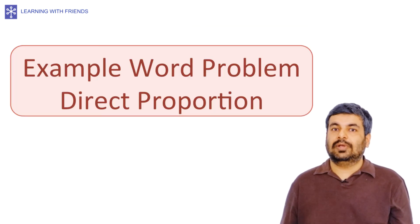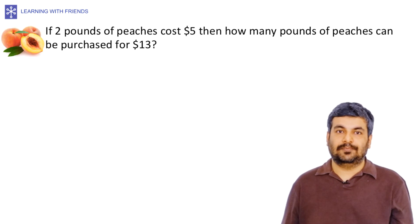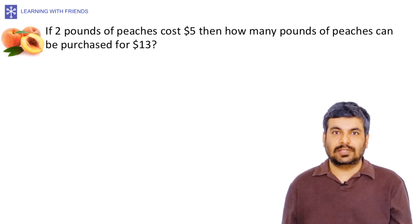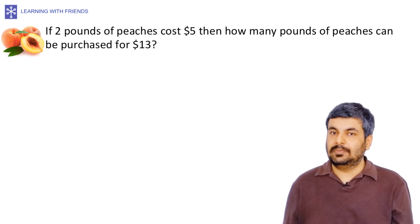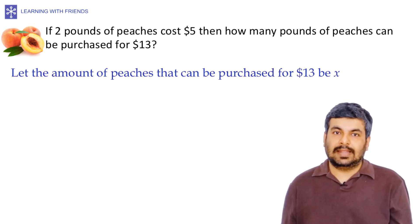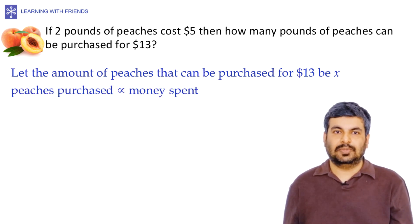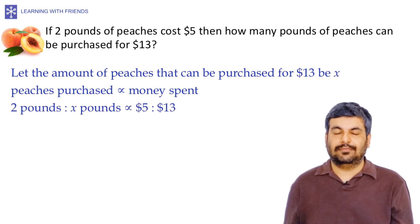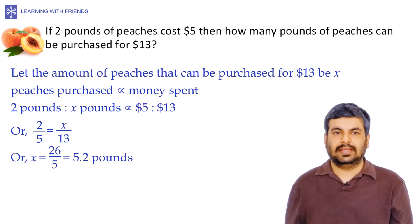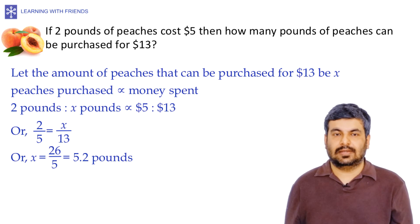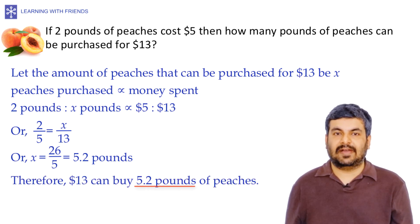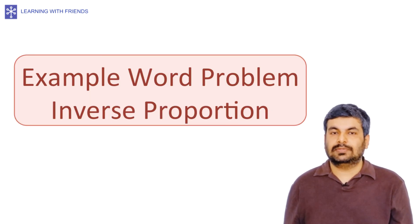Word problem on direct proportion: If 2 pounds of peaches cost $5, how many pounds can be purchased for $13? Let x be the amount of peaches for $13. Since there is a direct relationship, 2/5 = x/13. Cross multiplying gives x = 26/5 = 5.2 pounds. Therefore, $13 can buy 5.2 pounds of peaches.